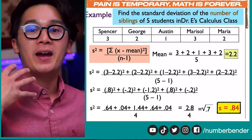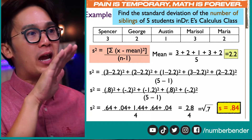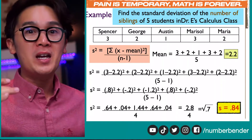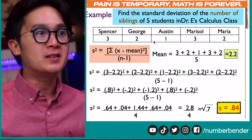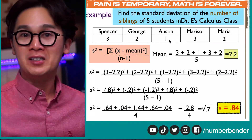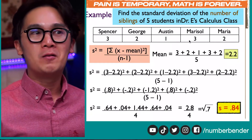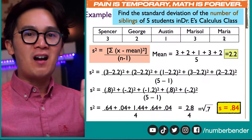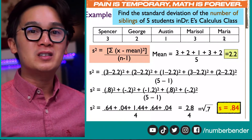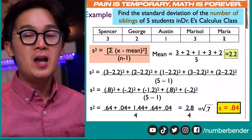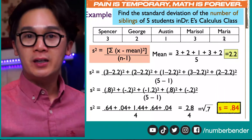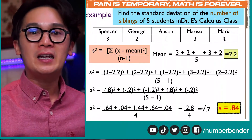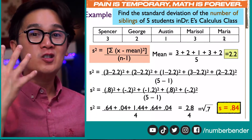The standard deviation is 0.84 in our data set. This is the spread or average differences of the number of siblings in my class, which is really small considering the values are 3, 2, 1, 3, and 2. This value would become bigger if, for example, Spencer had 7 siblings, George had 1, Austin had 22, Marisol had 0, and Maria had 5 — huge differences would result in a larger standard deviation. The smaller the standard deviation, the closer the data points are to each other.